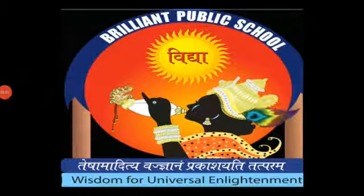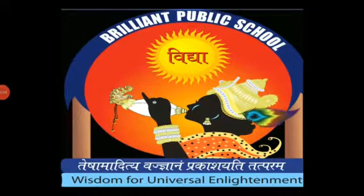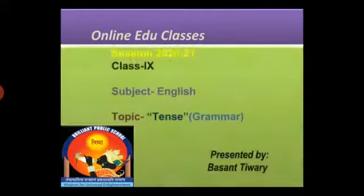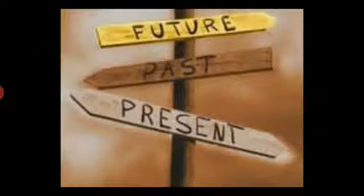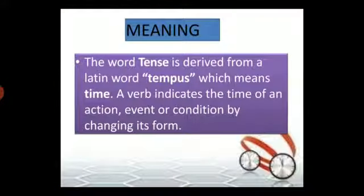Hello children and welcome to Brilliance Online Edu Classes. I am here with an important topic of grammar, that is tense. As we already know, there are three tenses: present, past, and future, on the basis of time. The word tense is derived from a Latin word 'tempus' which means time. Tense is a study of verb forms; a verb denotes the time of an action, event, or condition by changing its form.